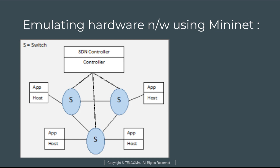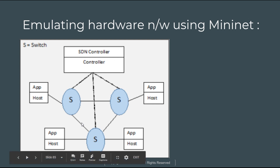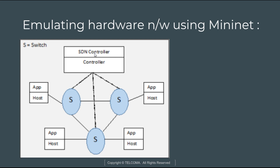Let's take an example using this diagram. Here we can have switches connected to a controller — an OpenFlow controller. We can have various applications on hosts connected to those switches. This is basically emulating a hardware network using Mininet, which allows us to design a hardware network topology.